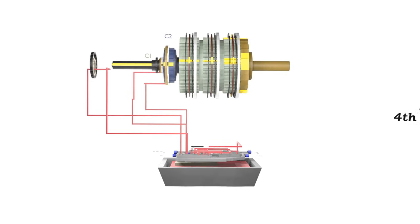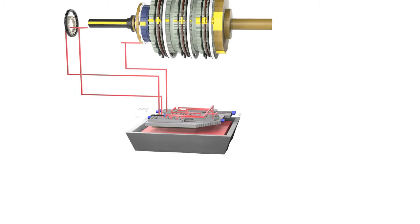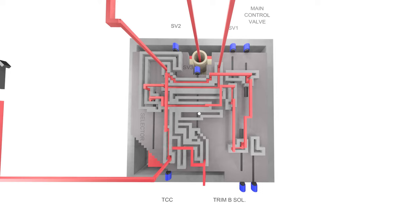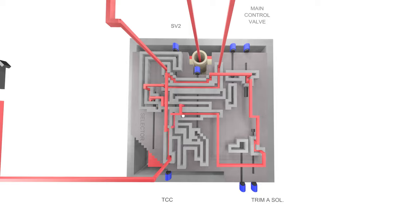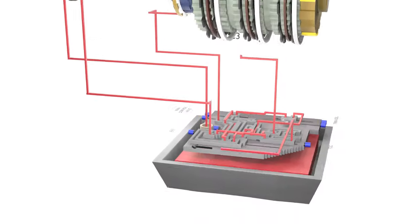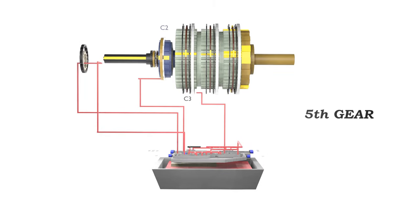For fifth gear we must engage C2 and C3. C1 will disengage and exhaust out through the C3 valve and trim B. To engage C3 the main line passes through trim A and shift valve 2. C2 and C3 are now engaged — fifth gear.